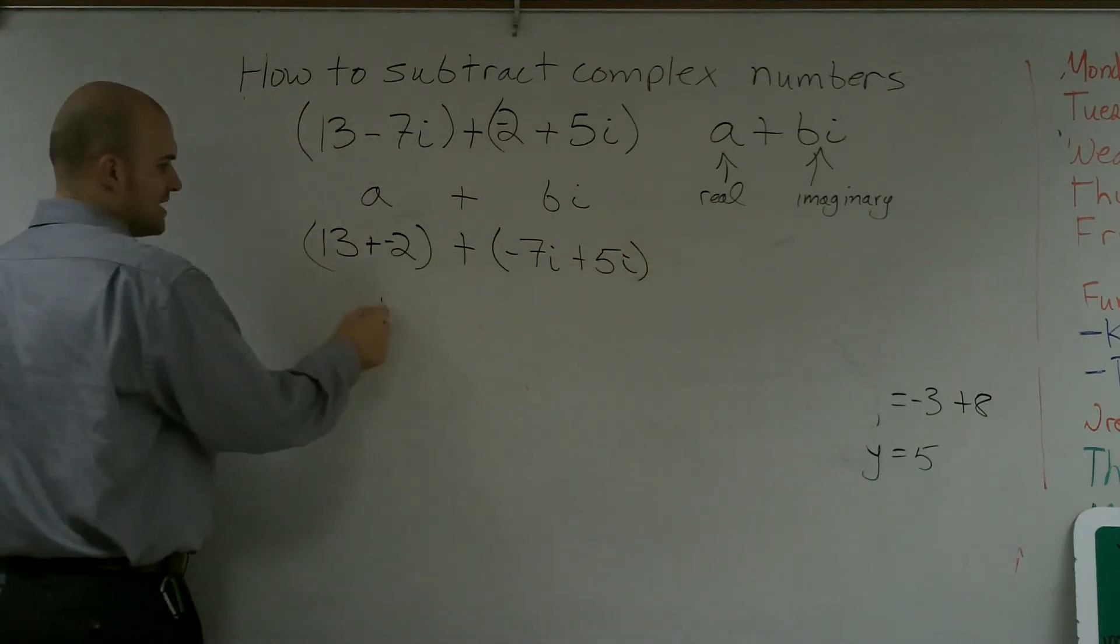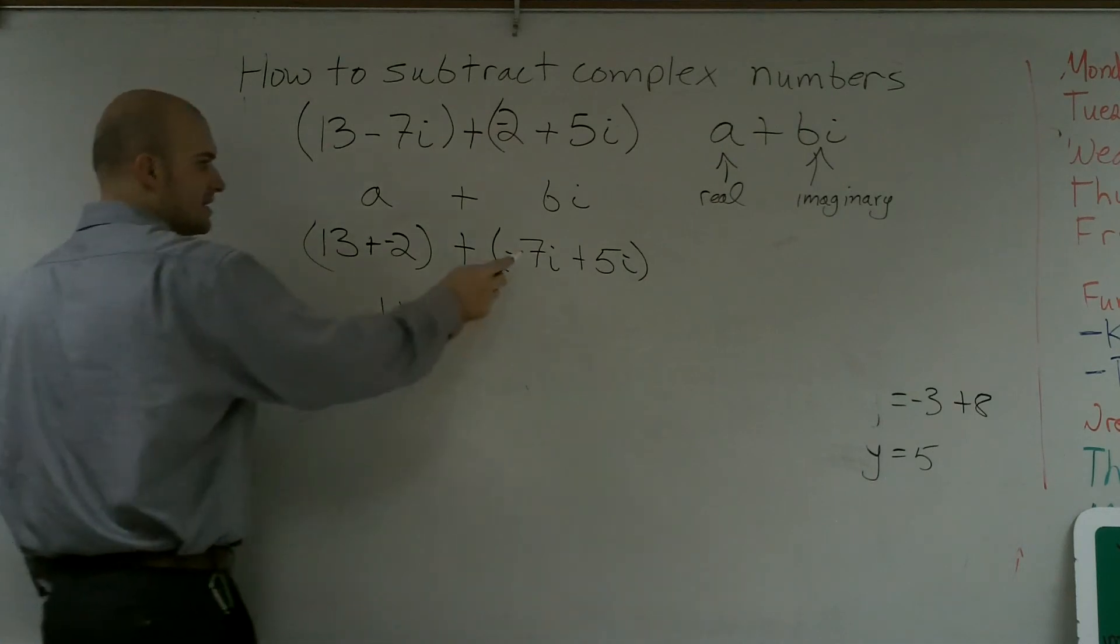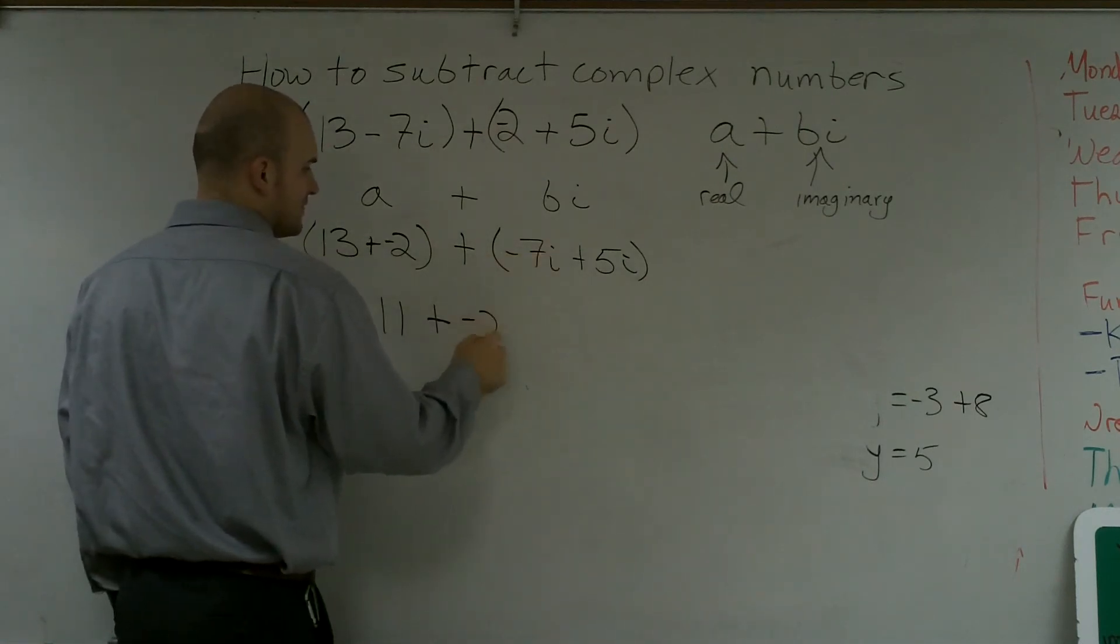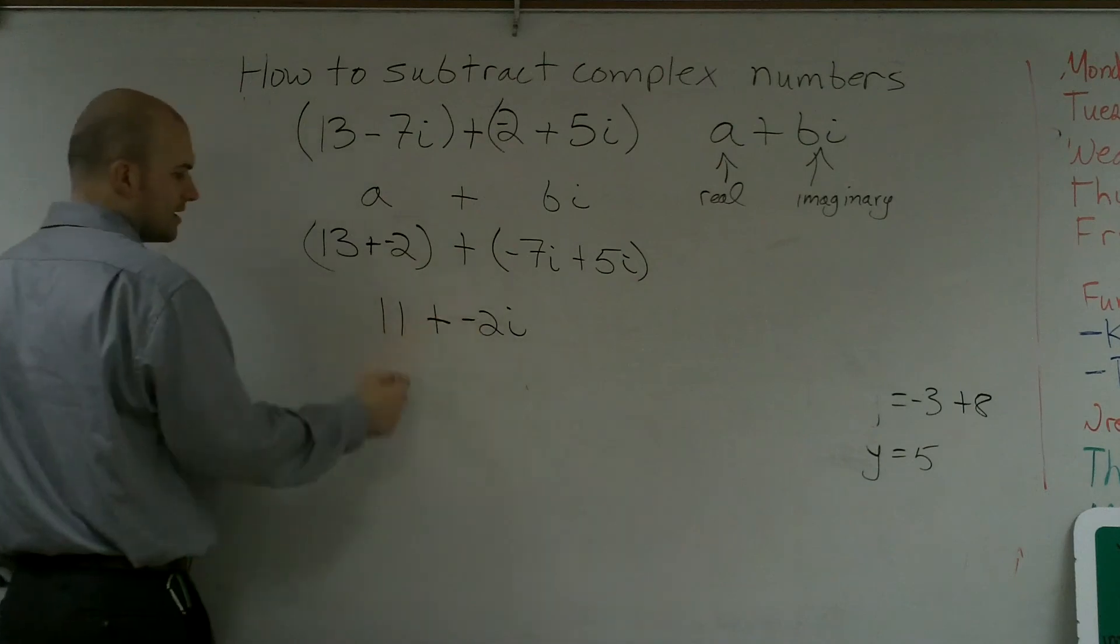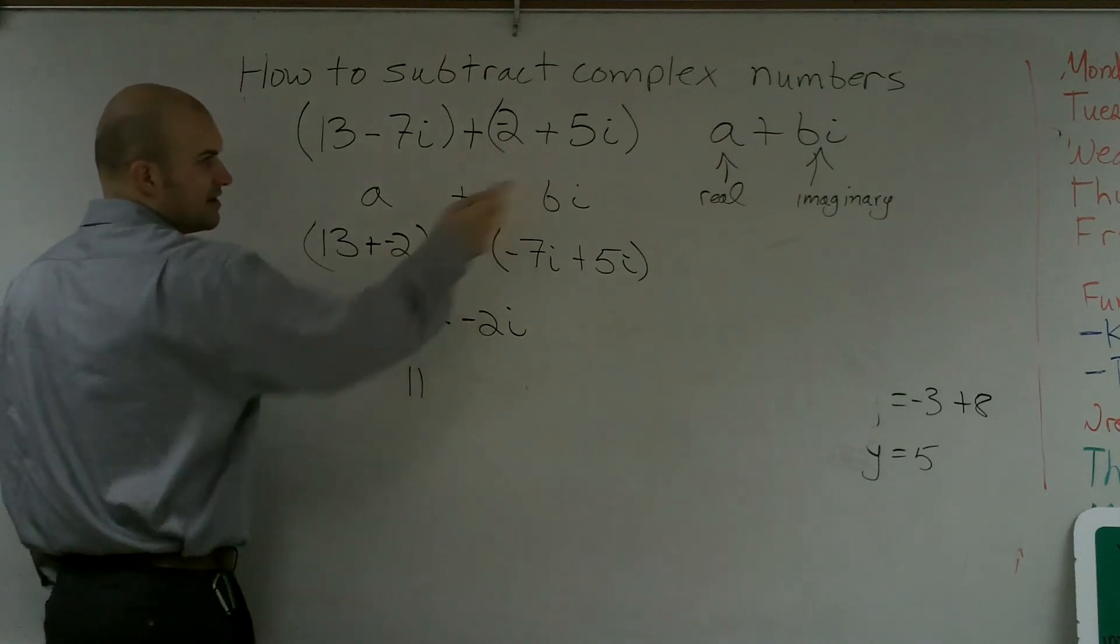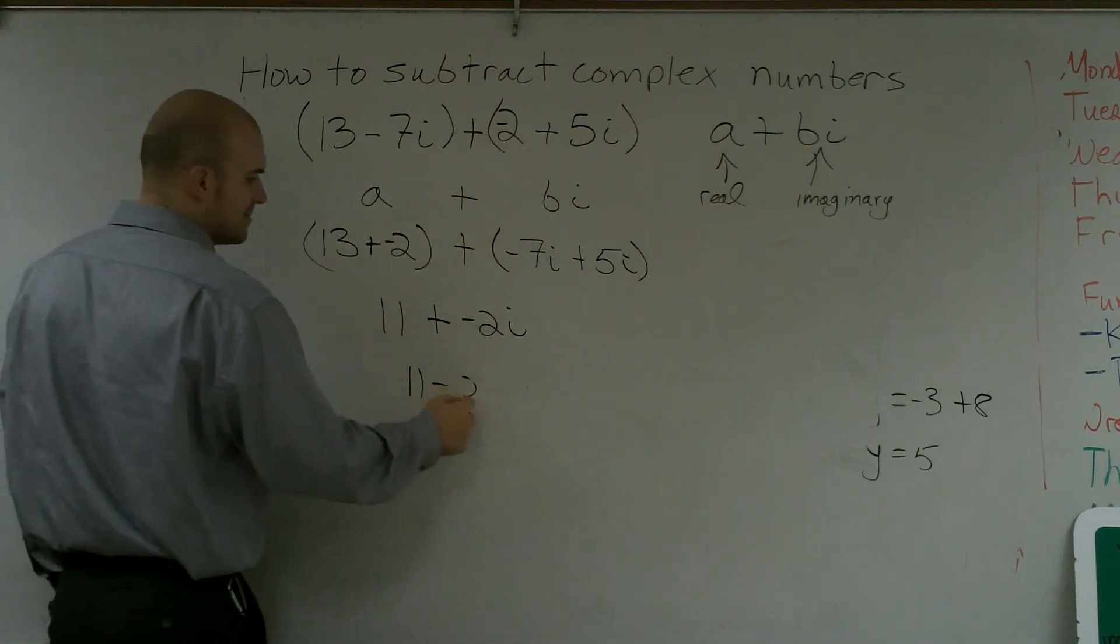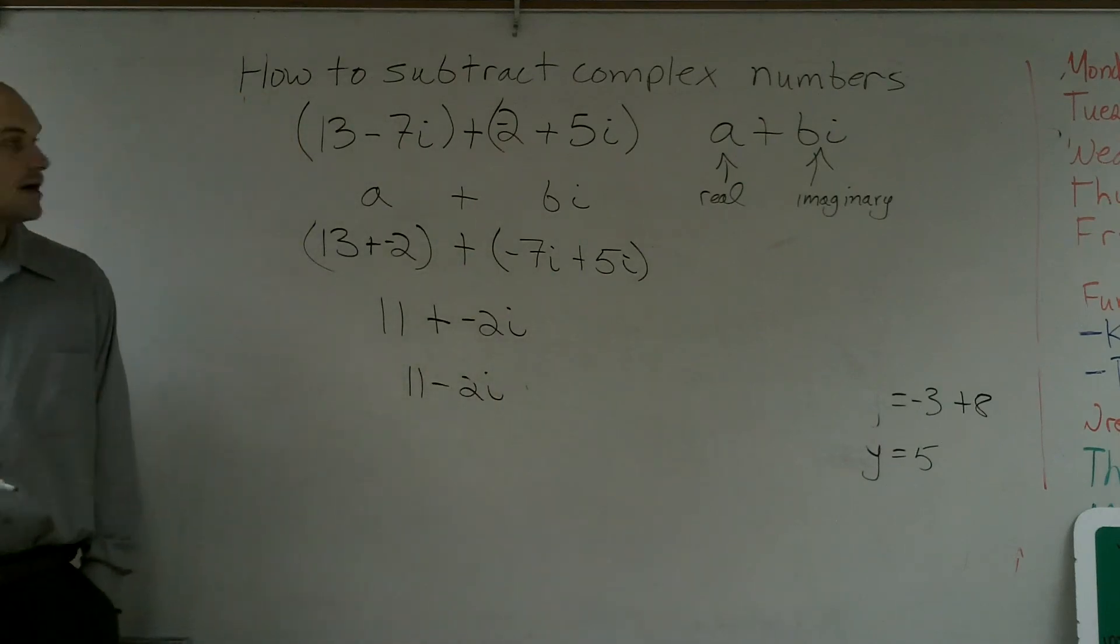Therefore, 13 plus negative 2 is 11, and negative 7i plus 5i is negative 2i. I'll write this as 11 minus 2i. So that's how you subtract complex numbers.